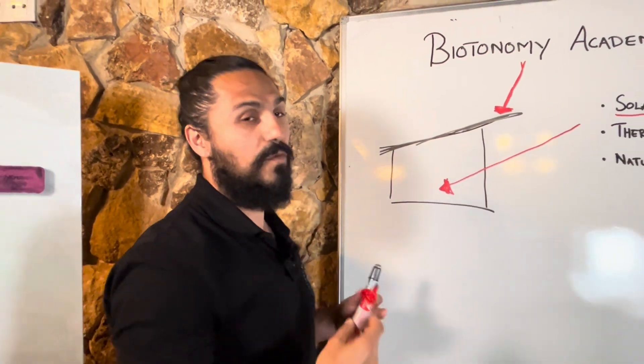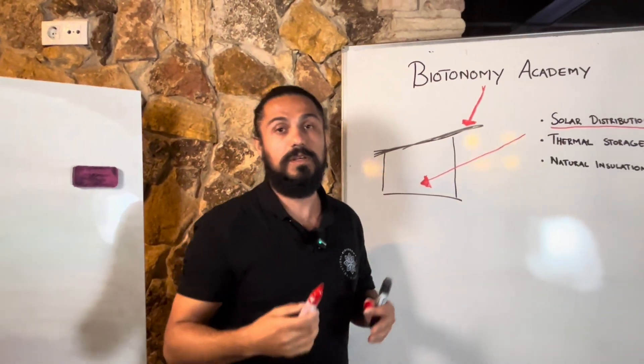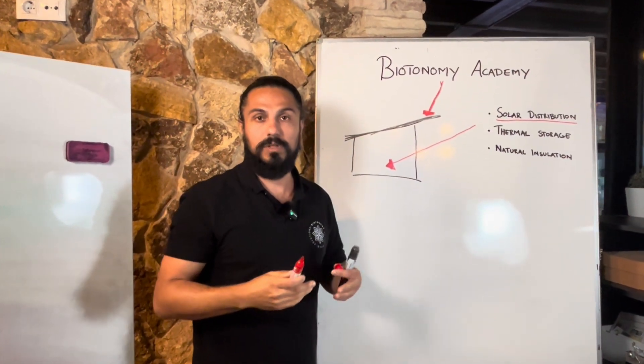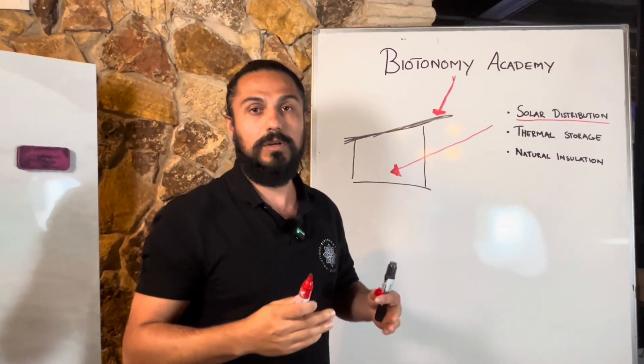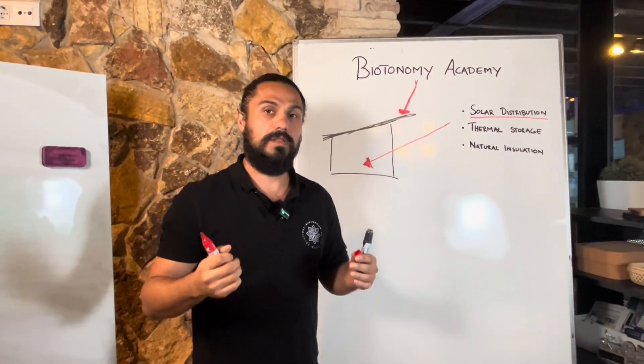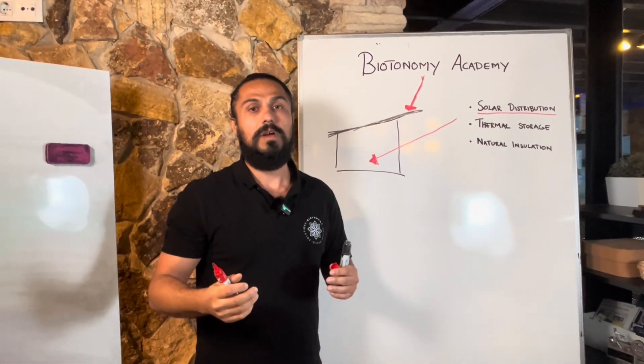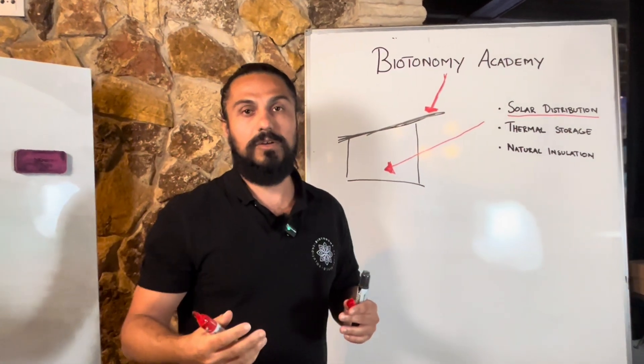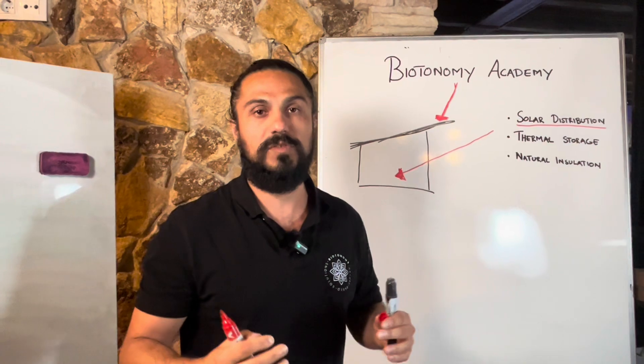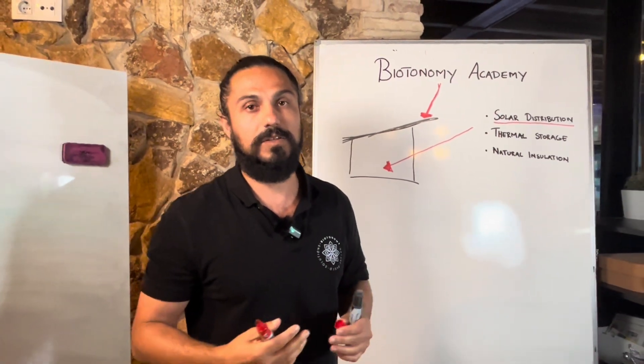So the first most important thing is orientation. Before you place your building on your plot you want to look where is my sunny side. If you are in the northern hemisphere then your sunny side is going to be south, while if you are in the southern hemisphere your sunny side is going to be north.